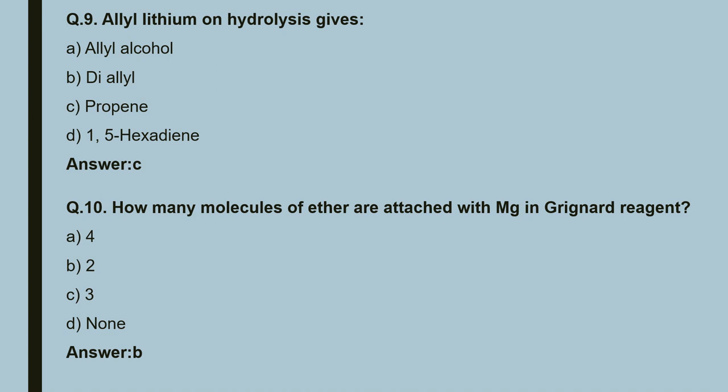Question 10: how many molecules of ether are attached with Mg in Grignard reagents? Two molecules are attached, so the correct answer is B.